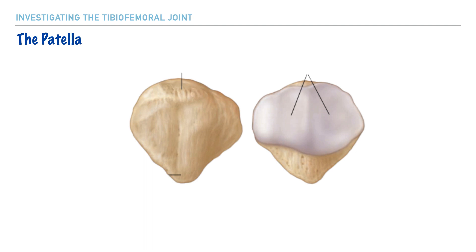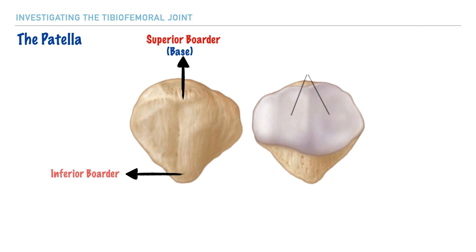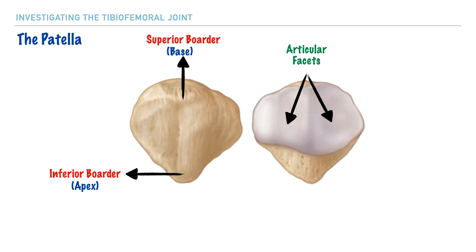Previously we identified the two main landmarks of the patella, and here we'll look at it from both anterior and posterior views. Anteriorly, we have the superior border — also called the base — and the inferior border — also called the apex. On the undersurface of the patella are the articular facets, where the patella glides within the femoral groove either superiorly or inferiorly with movement of the knee joint.